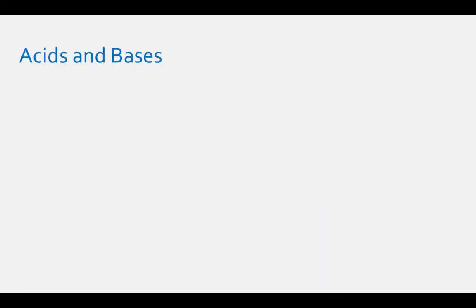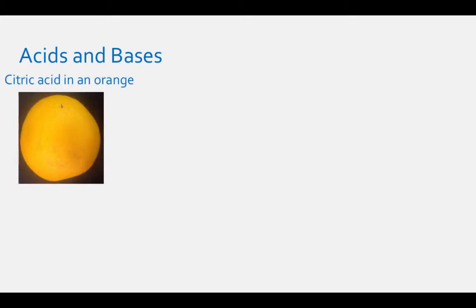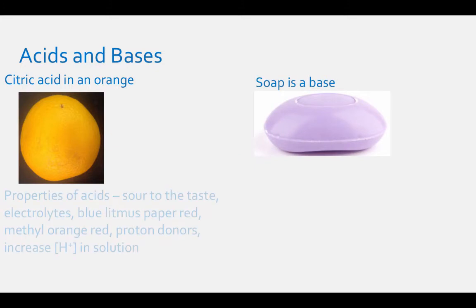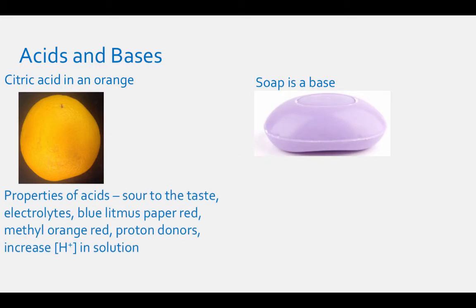All of you have experienced acids and bases. If you have ever eaten an orange, you have consumed citric acid. If you have ever used soap, you have used a base. The properties of acids are that they are sour to the taste, they are electrolytes, they turn blue litmus paper red, and methyl orange, an indicator, red. They are proton donors, and they increase the H+ concentration in an aqueous solution.